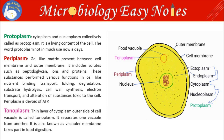Next is Tonoplasm. The thin layer of cytoplasm on the outer side of the cell vacuole is called tonoplasm. It separates one vacuole from another and is also known as the vacuolar membrane, taking part in phagocytosis.